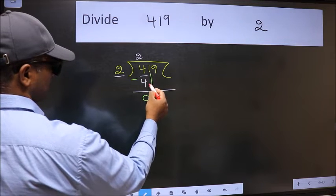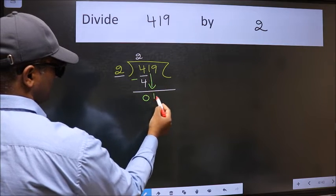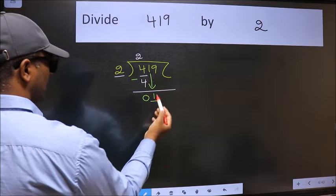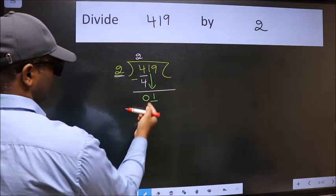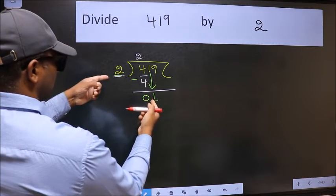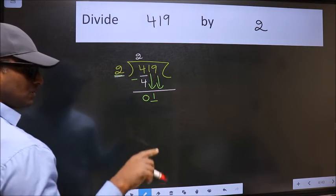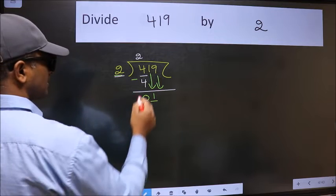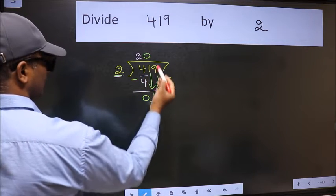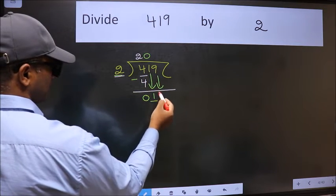After this bring down the beside number. So 1 down. Now here we have 1 and here 2. 1 is smaller than 2. So we should bring down the second number. And the rule to bring down second number is we should put 0 here. Then only we can bring down this number.